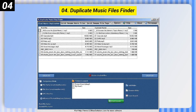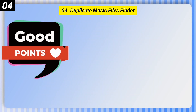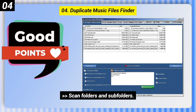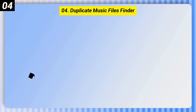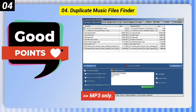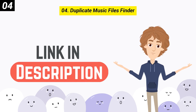Number 4: Duplicate Music Files Finder. Good points: simple to use, scan folders and subfolders. Bad points: MP3 only, dated interface, requires WinAnt. You can check out the link in the description box.